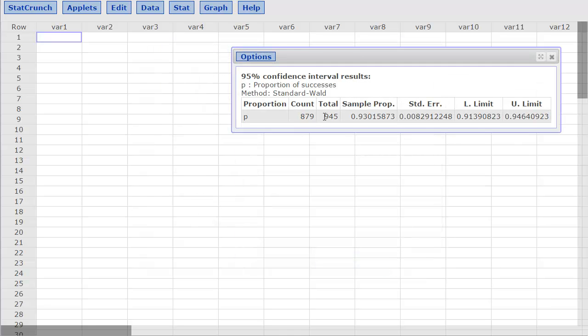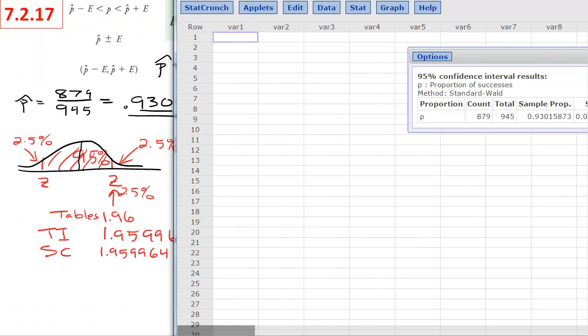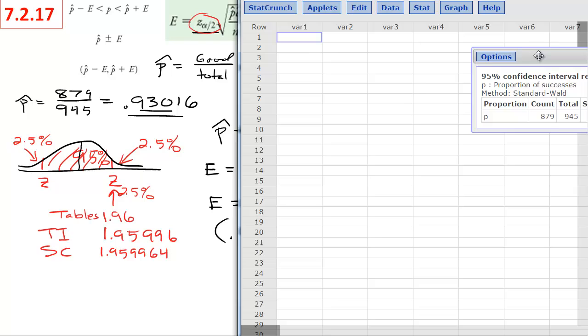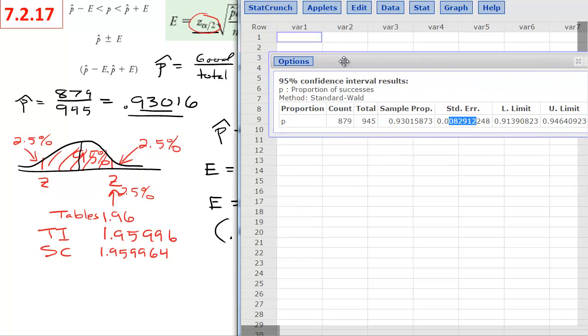Here is your count, here is your total, here is your p hat. Here is your standard error. That is not E. E is margin of error. This standard error is actually the piece of your equation that is not including the critical values.